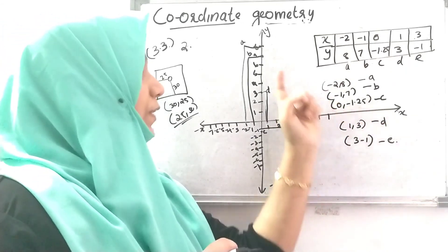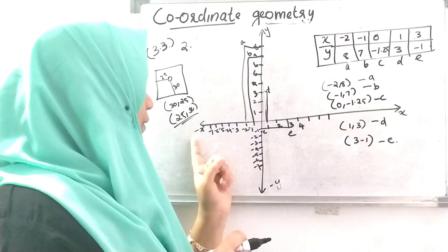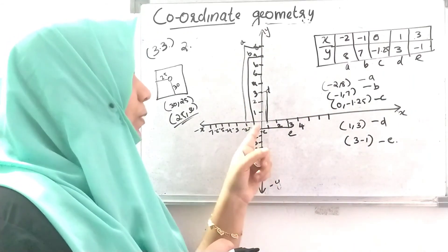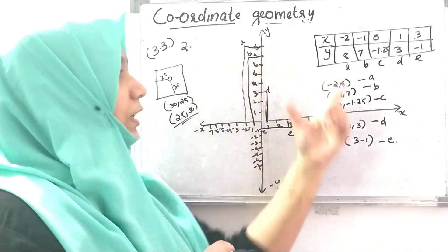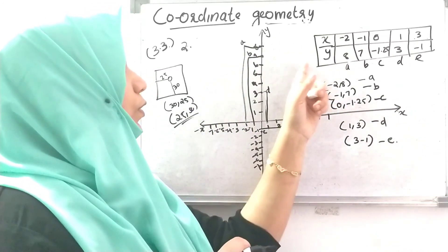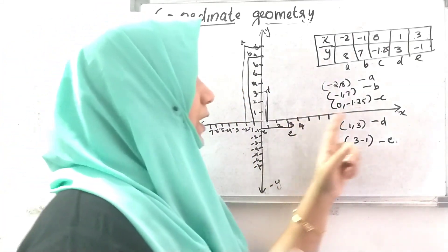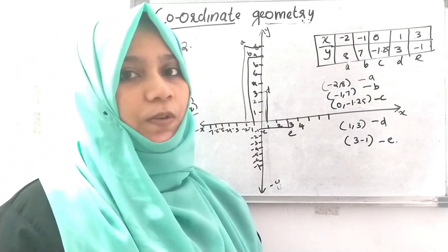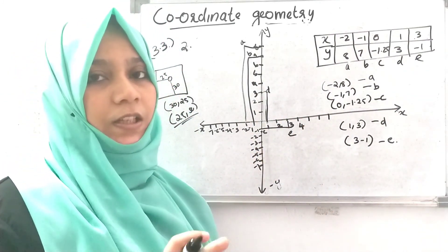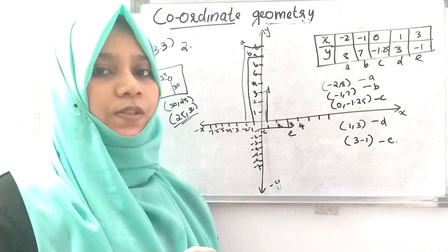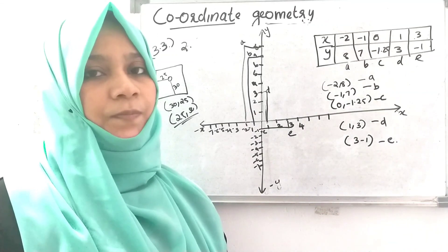The x-axis and y-axis consist of positive x-axis, negative x-axis, positive y-axis, and negative y-axis. The point of intersection is the origin, the plane is the Cartesian plane, and the coordinates are the x and y values. If you have any doubts about the questions, please refer back to the x-axis and y-axis concepts. Thank you.